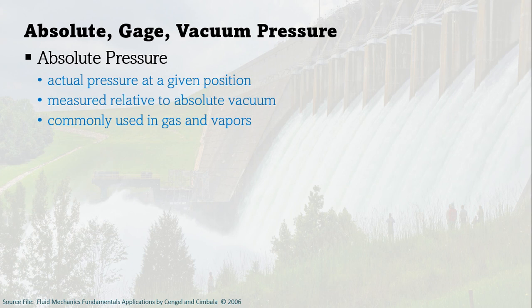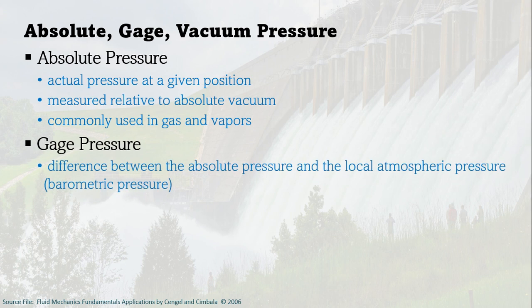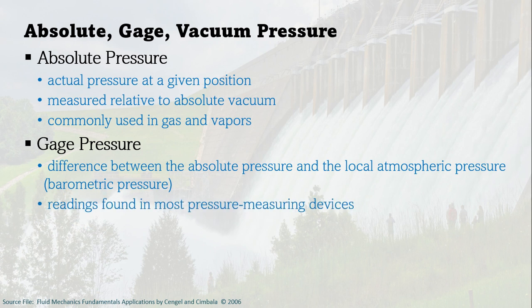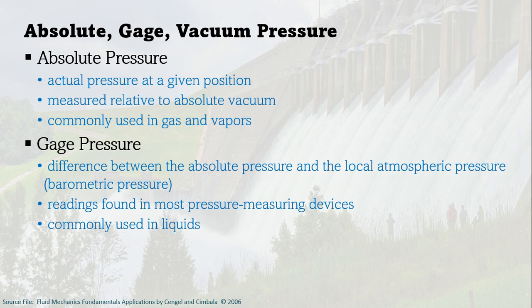Gauge pressure, on the other hand, is the difference between the absolute and the local atmospheric pressure. Sometimes we call it barometric pressure because it is measured using an instrument called the barometer. Usually the reading in most pressure measuring devices are in gauge. Gauge pressure is commonly used in liquids, while absolute pressure is commonly used in gas and vapor.